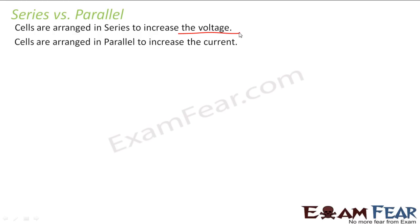For example, if you have 3 batteries each of EMF 2 volts and you arrange them in series, then the equivalent EMF of the circuit becomes 2 plus 2 plus 2, that is 6 volts. So your voltage gets increased when you arrange cells in series.